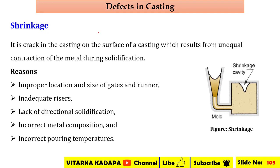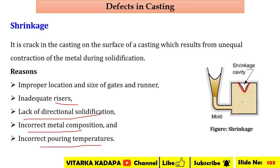Next are shrinkage defects. Shrinkage occurs on the surface of the casting resulting from unequal contraction of the metal during solidification. The reasons include improper location and size of gates and runners, inadequate risers — since risers are used for directional solidification — lack of directional solidification, incorrect metal composition, and incorrect pouring temperatures.